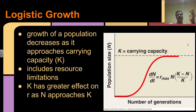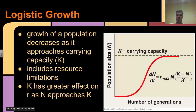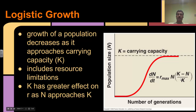The carrying capacity has a greater effect on the rate of growth as N approaches K. So as the size of the population approaches the carrying capacity, population growth tends to slow down more. You can see how we use that formula: it's (K minus N) over K, and you can see that K is having a larger impact as N approaches K.